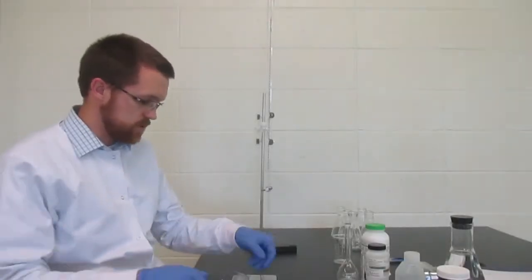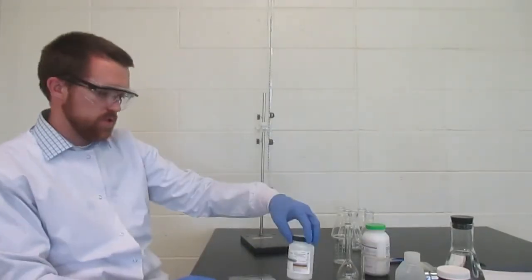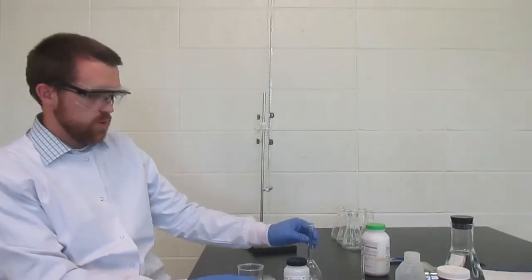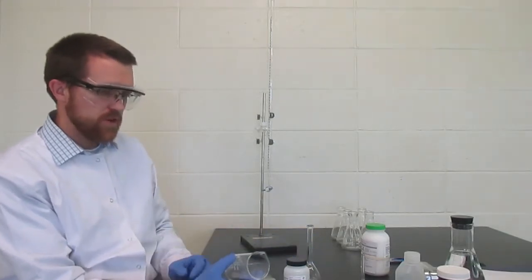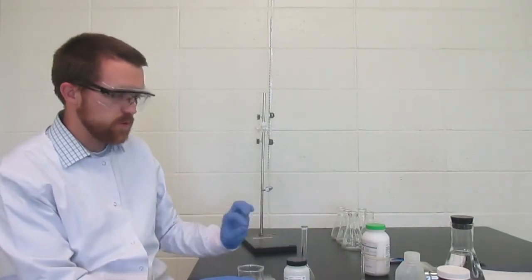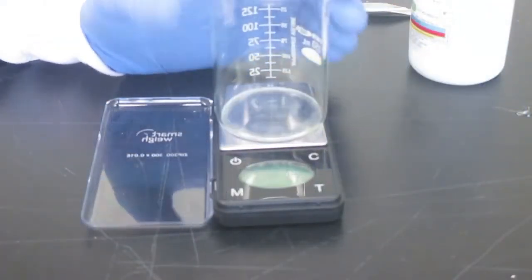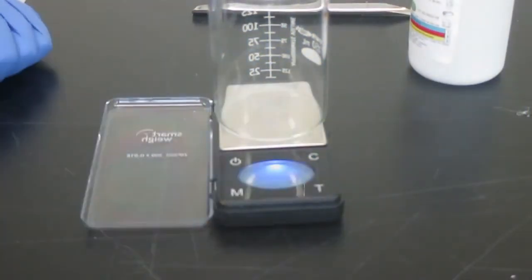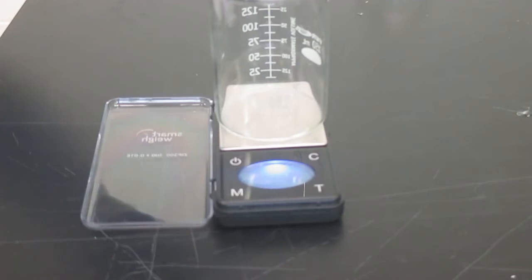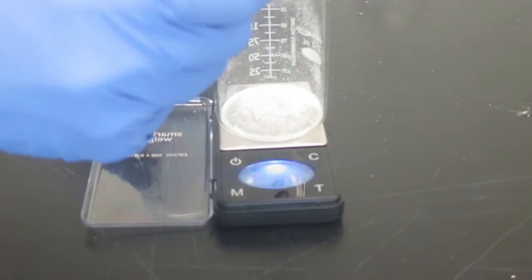Alright, so let's make our standard solution of KHP. We will have to dissolve our 3.06 grams in exactly 100 mils of water. So we will weigh out 3.06 grams first, dissolve it in about 50 mils or so, pour it into our volumetric flask so that we can get a very precise measurement of 100 milliliters. Okay, so we'll start with zeroing our beaker on the scale.